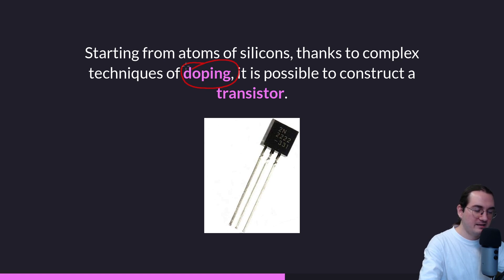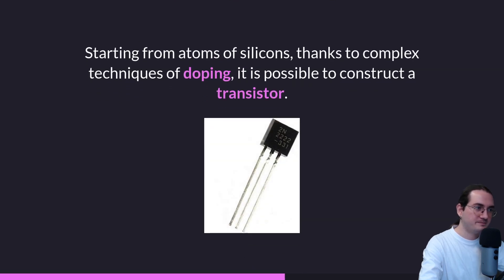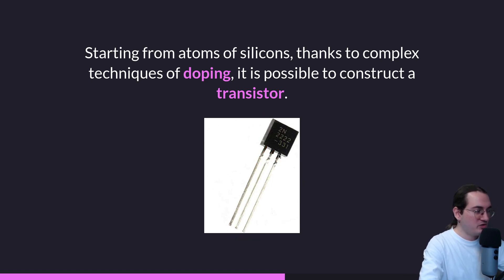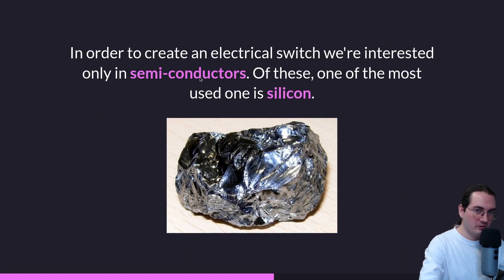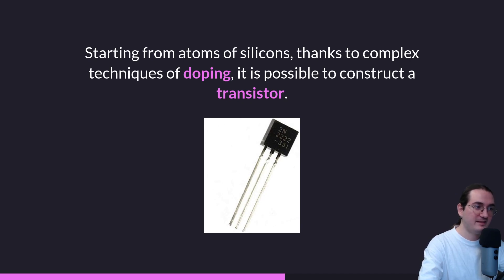We won't go into the detail of doping here — there are videos I'll link in the description. The idea is: you take silicon from the real world, process it in a lab to get doped silicon, and then construct a transistor. When you buy a transistor from an electrical shop it has three legs, which are the most important part. Doping modifies the silicon by introducing small amounts of different elements to enable control over electricity flow.